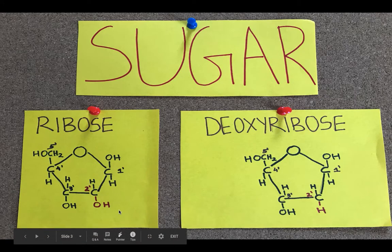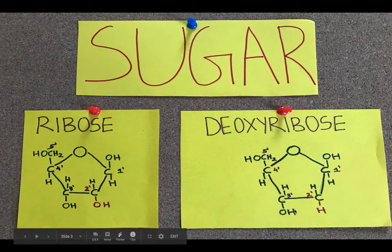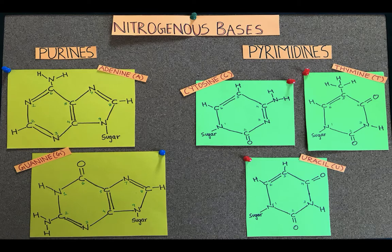The deoxyribosugar is found in DNA or deoxyribonucleic acid and doesn't have a hydroxy group on the 2' carbon. There are two types of nitrogenous bases: purines and pyrimidines.